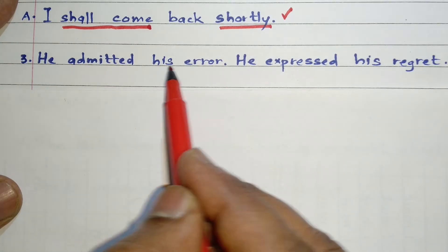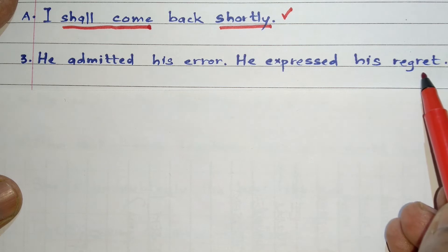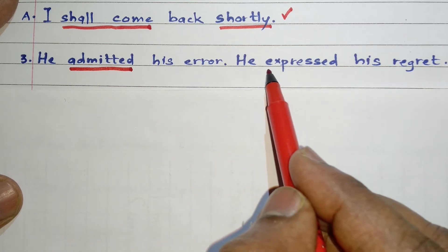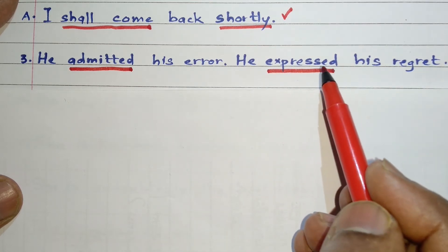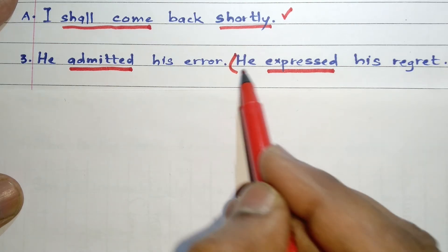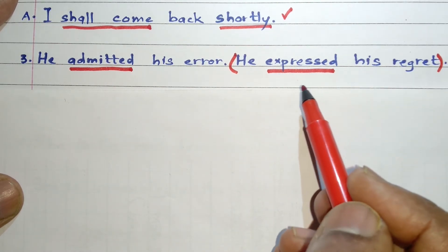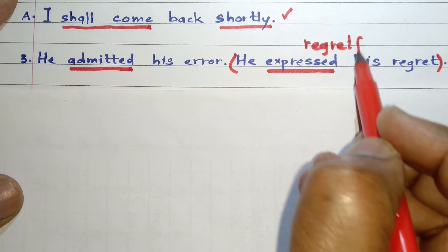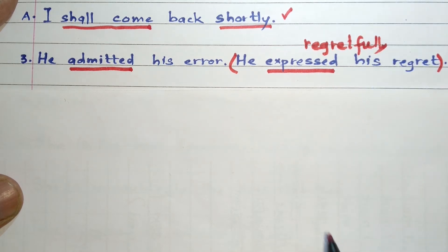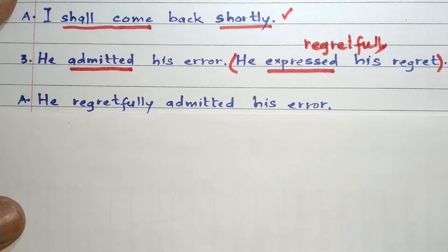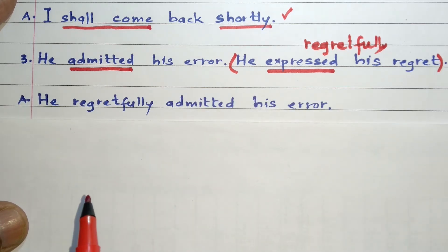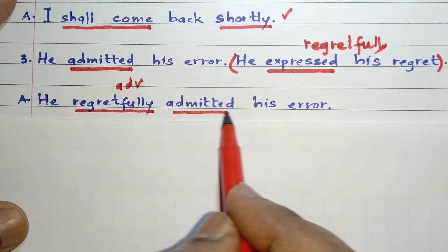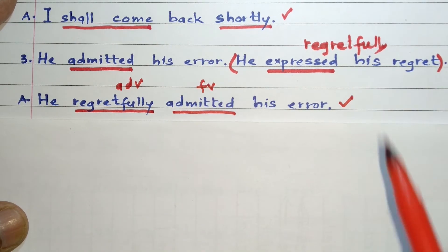Next example: He admitted his error. He expressed his regret. In the first sentence, 'admitted' is the finite verb. In the second sentence, 'expressed' is the finite verb. We can eliminate the second sentence and replace it with one word. Instead of 'he expressed his regret,' we can use the adverb 'regretfully.' So our answer will be: he regretfully admitted his error. Here 'regretfully' is the adverb, 'admitted' is the only finite verb, and therefore our sentence is a simple sentence.